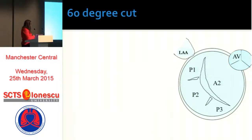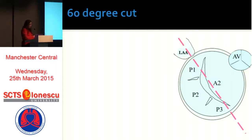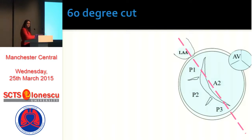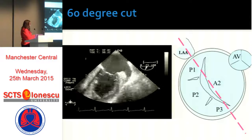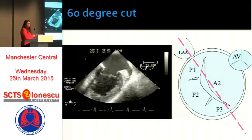At the 60-degree plane, you're cutting along the closure line — called the commissural view. However, the name is a misnomer because you don't actually see the posteromedial nor the anterolateral commissure. What you do see is the left atrial appendage, then P1, A2 in the middle, and P3 on the side.